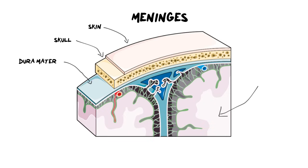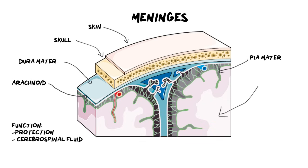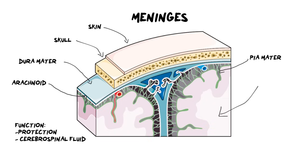Sitting just below the dura mater is the arachnoid layer, where all your blood vessels are found. Then the most inner meninges, which sits right up against the brain itself, is a very delicate layer called the pia mater. Altogether, the meninges are protective layers around both the spinal cord and the brain. They are there for protection and they also allow cerebrospinal fluid to be secreted. Cerebrospinal fluid assists with lubrication and protection, making sure that your brain is well secured.